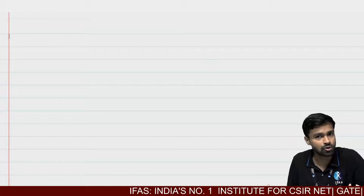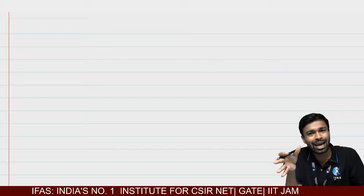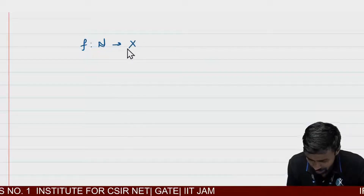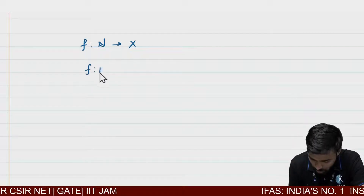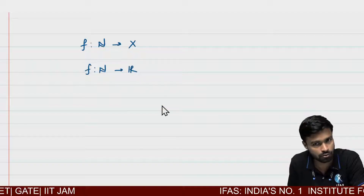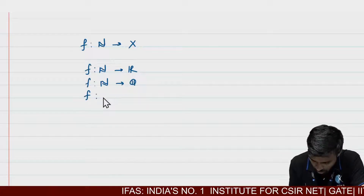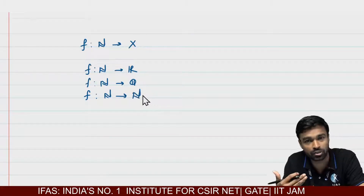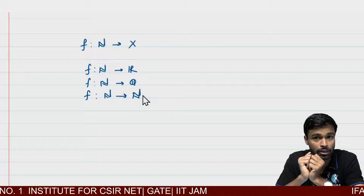First of all, we have to take some sequence — let us say sequence a_n, a sequence of real numbers. What is a sequence first of all? A sequence is a function from the set of natural numbers to any kind of set. So if I am defining a function f from the set of natural numbers to x, then this is a sequence having elements from x. So it depends on x. If f is from N to real numbers, then it is a sequence of real numbers.